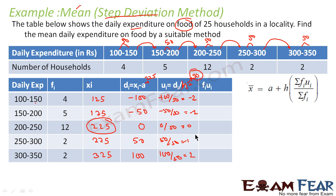Now I have to find fiui. This we have to multiply with this. 4 × minus 2 is minus 8. 5 × minus 1 is minus 5. 12 × 0 is 0. 2 × 1 is 2. And 2 × 2 is 4. If you add these, what you get is minus 7. And if you add fi, what you get is 4 + 5 = 9, plus 12 = 21, plus 4 = 25.